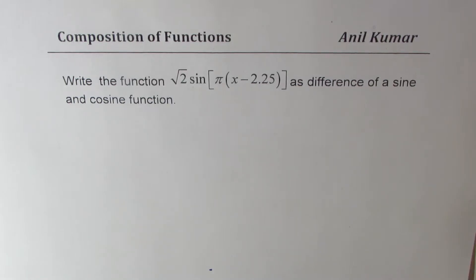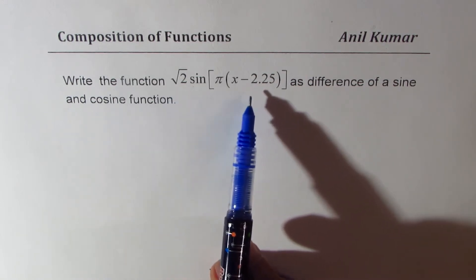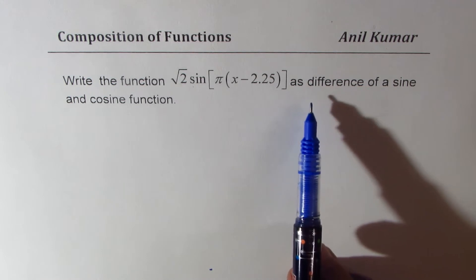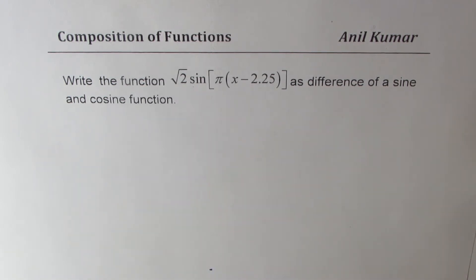I'm Anil Kumar. Welcome to my series on functions. We'll talk about combination of functions in this particular video. Some of my students have just completed the unit on trigonometry and they're moving into composition of functions. Here's an example for them. Write the function square root of 2 sine of pi times x minus 2.25 as difference of a sine and cosine function.